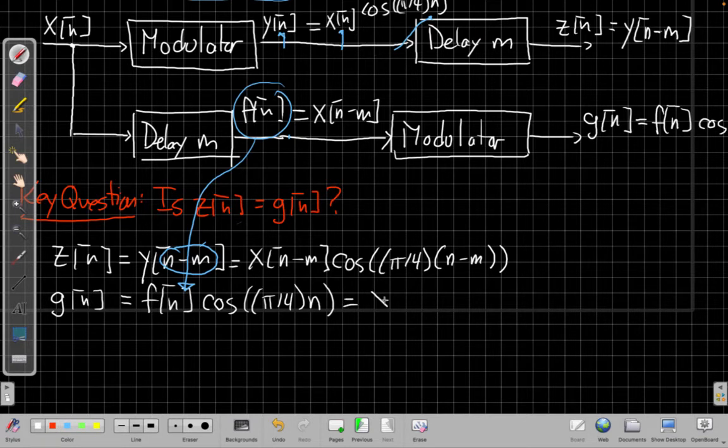Right so when I put that in for f[n], this equation becomes x[n-m] times cosine pi over 4 times n.